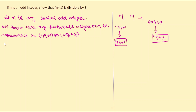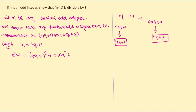Case 1: n = 4q + 1. Then n² - 1 = (4q+1)² - 1 = 16q² + 8q + 1 - 1 = 16q² + 8q. Taking 8 as common: 8(2q² + q). So n² - 1 is divisible by 8 when n = 4q + 1.